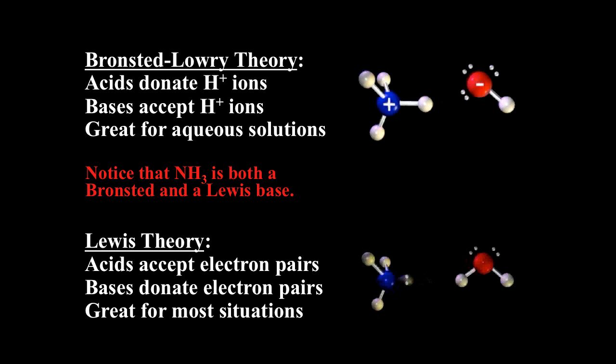We can also think about this reaction in terms of Lewis theory. In Lewis acid-base theory, the emphasis is on the electron pair. Ammonia is a base because it acts as an electron pair donor toward the proton. The proton is an acid because it acts as an electron pair acceptor. The transfer of a hydronium ion is occurring because ammonia has that lone pair — ammonia donates the lone pair making it a Lewis base, and the hydronium ion accepts it making it a Lewis acid. Again, all Brønsted acids are Lewis acids, but not all Lewis acids are Brønsted acids because Lewis theory is more general.